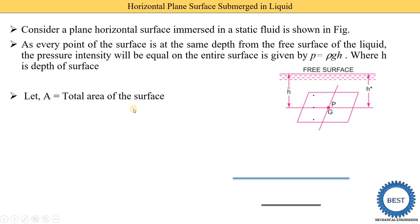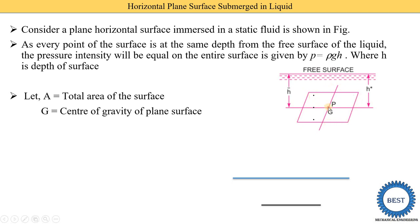Now, A equals the total area of the surface — for a rectangular or square surface, area equals length times width. G is the center of gravity of the plane surface. There are two notation points: G indicates the center of gravity, meaning the mass of this plane surface is located at this point. The second point, P, is the center of pressure — meaning the total pressure force acts at one point and that point is called the center of pressure.